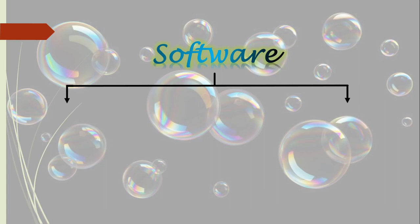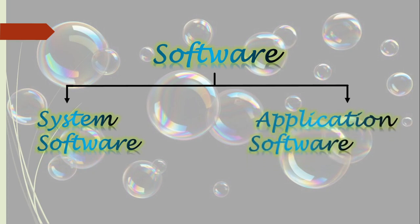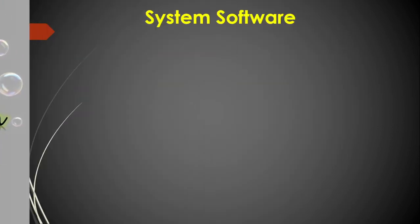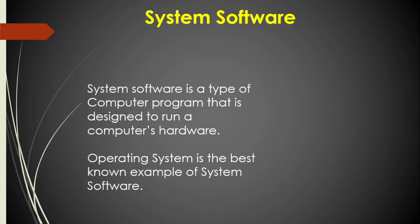Software is divided into two types: system software and application software. System software is a type of computer program that is designed to run a computer's hardware and operating system.